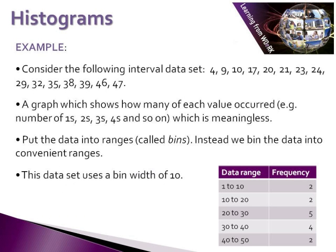So let's actually have a look at an example. If we consider an interval set of data that runs from 4 to 47, if we plotted this data on a graph it would be relatively meaningless — it would just show various different points and wouldn't make an awful lot of sense. But if we put the data into ranges, or we call them bins, it enables us to start almost categorising our data. So we take our interval data set with values from 4 to 47 and construct a number of different convenient ranges.